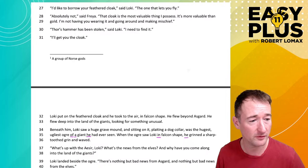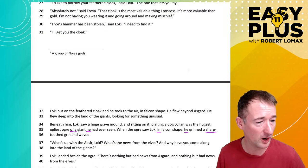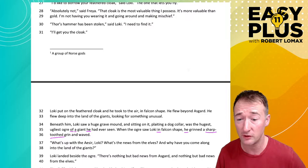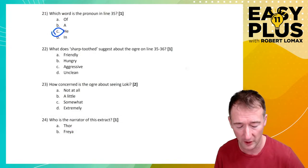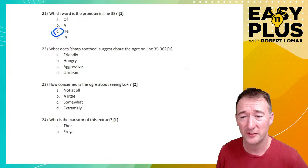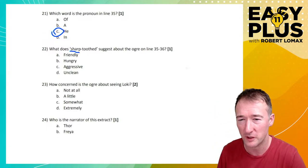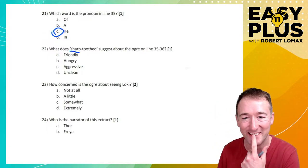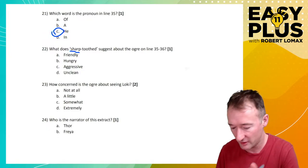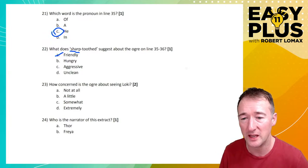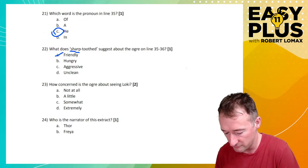We're not going to completely get rid of the other options, but it's helpful to think about it in that way. So, lines 35 to 36. He grinned a sharp-toothed grin and waved. So, when the ogre saw Loki in falcon shape, he grinned a sharp-toothed grin and waved. What's up with the Aesir, Loki? What's the news from the elves? So, we aren't given many clues. Right, so we just have to use our intuition, our judgment. So, friendly might be a wide smile. You wouldn't emphasize the sharpness of the teeth if you were trying to show the friendliness. Because what does the sharpness do? Sharpness is a ripping and tearing and biting into things. So, I think we can get rid of friendly.